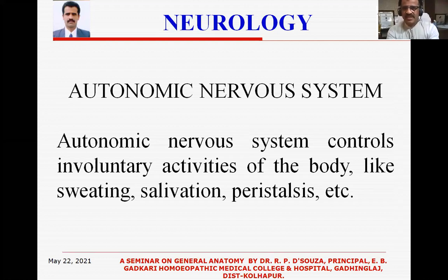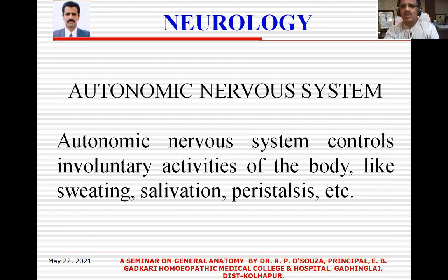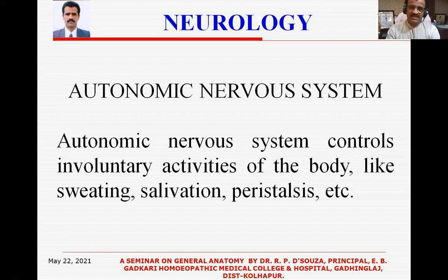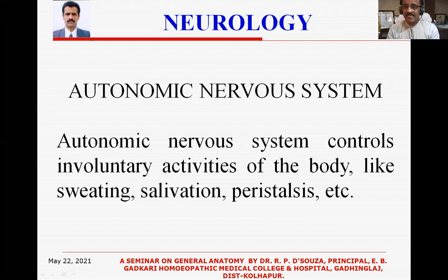The word autonomic comes from the word autonomy. Autonomy means self-governing — in Marathi it is called Swayat Tata. The nervous system which has got autonomy is the Swayat Nervous System. Opposite of that is Somatic, which is under your will — voluntary. Autonomic Nervous System is involuntary; it is not under your will. So, the Autonomic Nervous System controls involuntary activities of the body like sweating, salivation, and peristalsis.